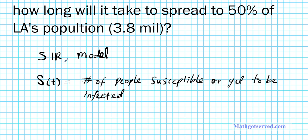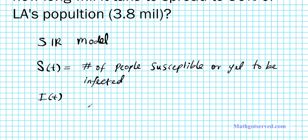The next letter in the SIR acronym is I. I(t), this function represents the number of people that are infected with the disease. So I represents the number of people infected.